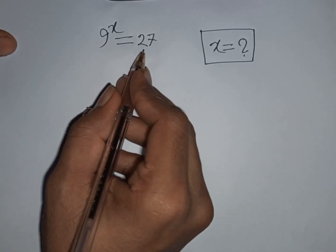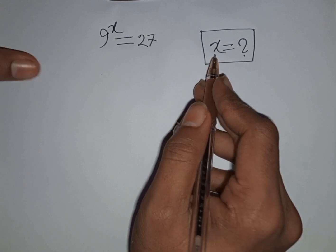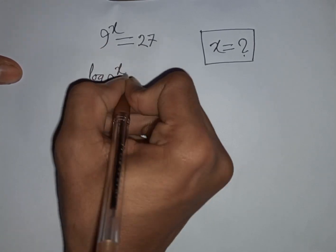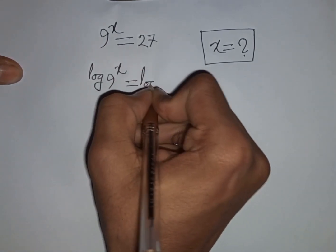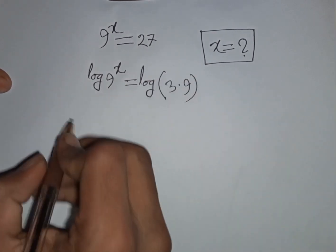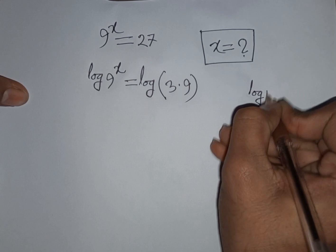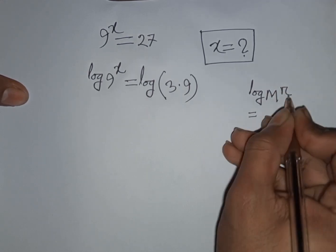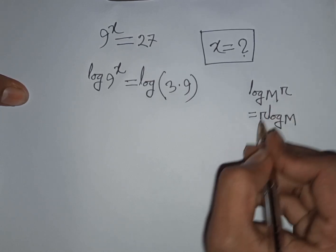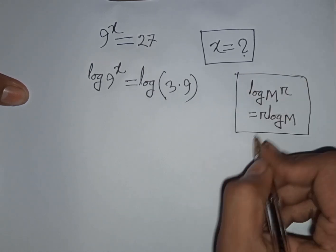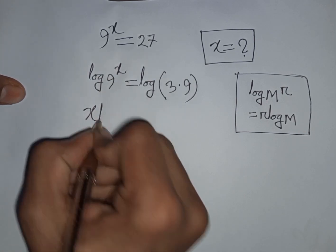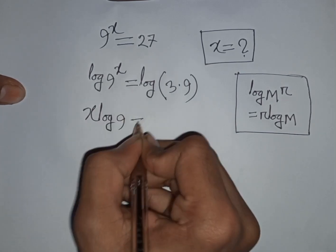How to solve 9 power x is equal to 27 — find the value of x. First, we take log on both sides. You can write log of 9 power x is equal to log of 27, which can be written as log of 3 times 9. Here you can apply the rule that log m power r is equal to r log m, meaning this power r moves to the base. So, this power x will move to the base, giving x log 9.